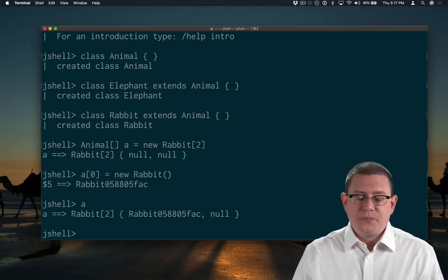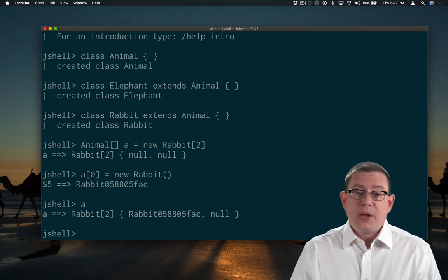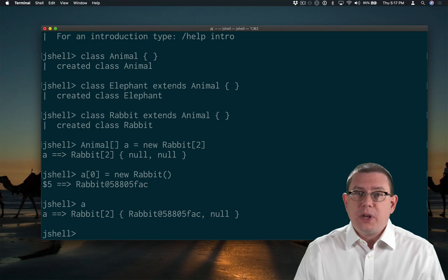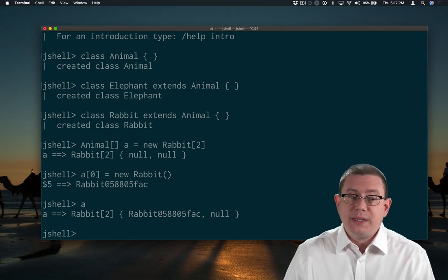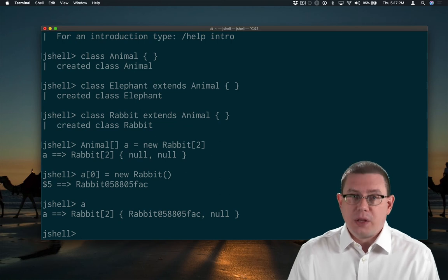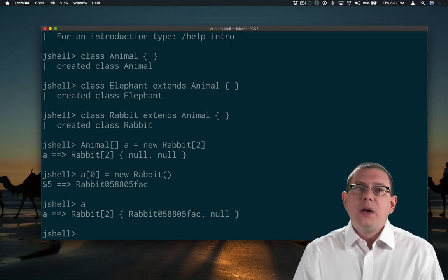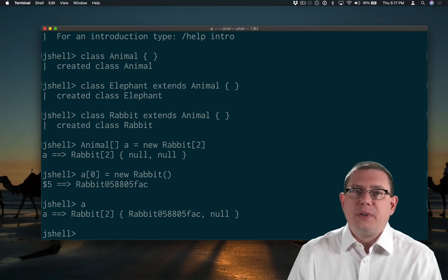So I have an array here. Its type was declared to be Animal array, but I'm allowed to store a Rabbit array in there, because Rabbit is a subclass of Animal. That's subtype polymorphism at work in Java.